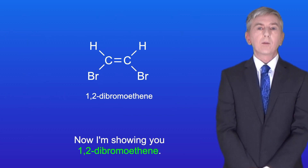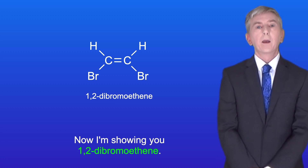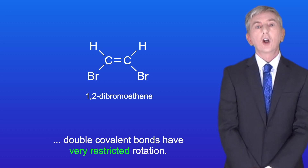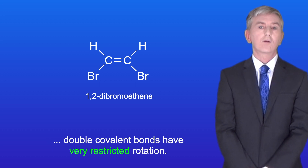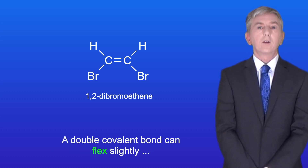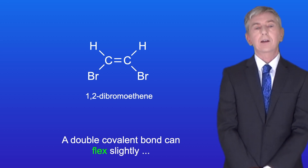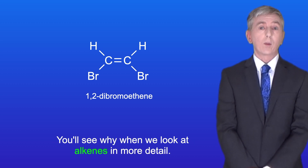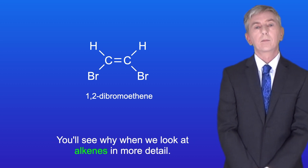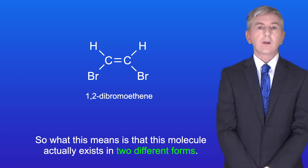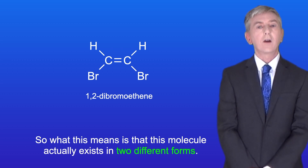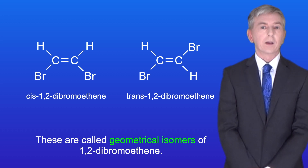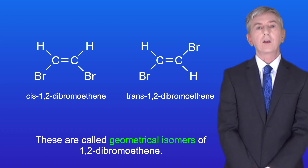Now I'm showing you 1,2-dibromoethene. Unlike single covalent bonds which are fully rotational, double covalent bonds have very restricted rotation. A double covalent bond can flex slightly but it cannot rotate like a single covalent bond, and you'll see why when we look at alkenes in more detail. So what this means is that this molecule actually exists in two different forms — these are called geometrical isomers of 1,2-dibromoethene.